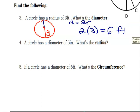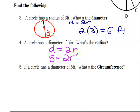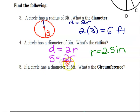A circle has a diameter of five — what is the radius? Diameter equals 2r. So if the diameter is five, I find half of that, which is 2.5 inches. If you want to go from radius to diameter, multiply by two; if you want to go from diameter to radius, divide by two.